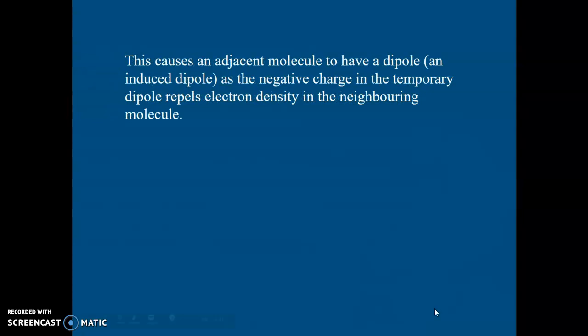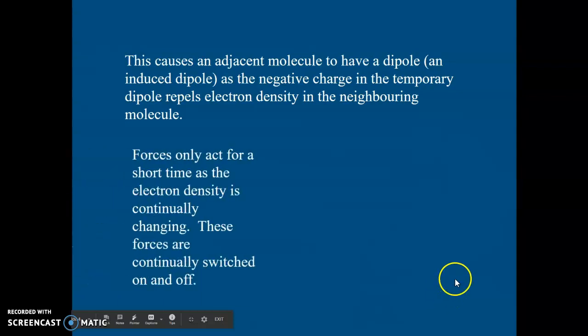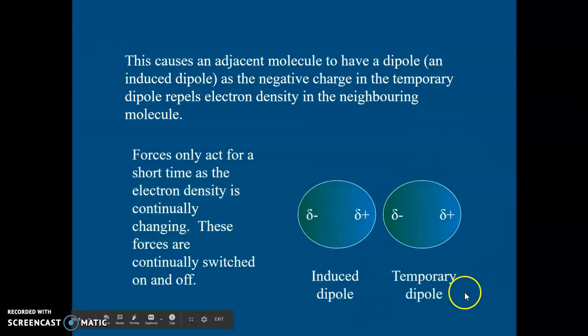Adjacent molecules will have the opposite dipole because of repulsion. So there is the sort of setup you will get. An induced dipole on a neighbouring molecule. There's my original molecule, its temporary dipole, and the neighbouring molecule has the opposite dipole. Now, these forces are referred to as being switched on and off because they're there for such a short time because the electron density is continually moving. That is why these forces are so weak.